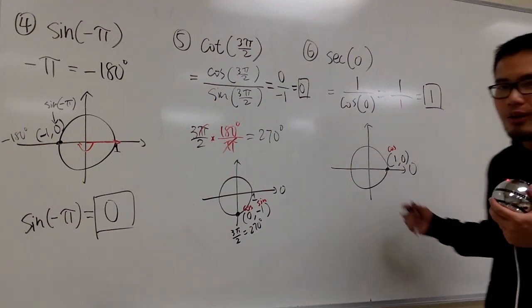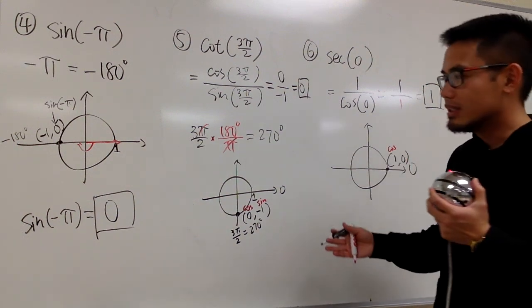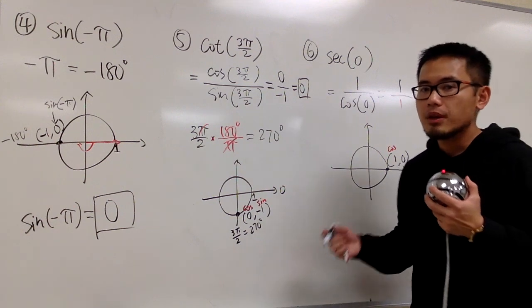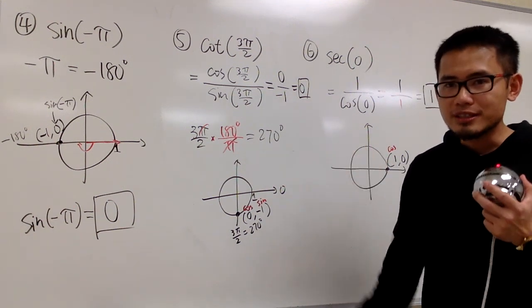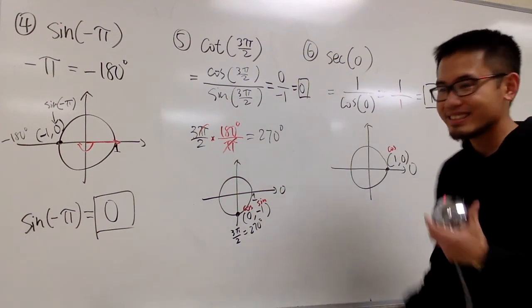That's it. So hopefully you guys find this video to be helpful. And this is how you are going to use the idea of the unit circle to help you find the exact values of the sine, cosine, tangent, and things like that when we have a quadrantal angle inside, just like this. That's it.